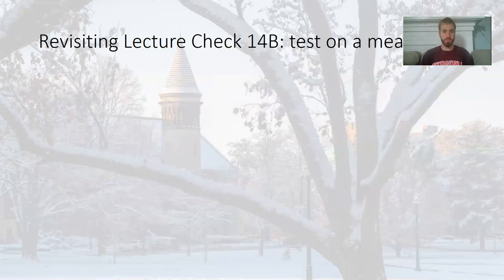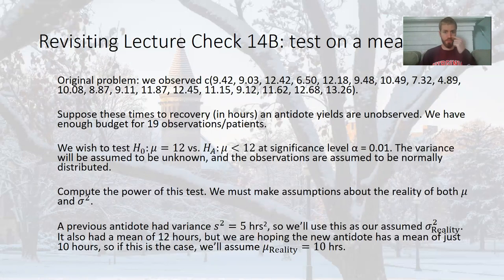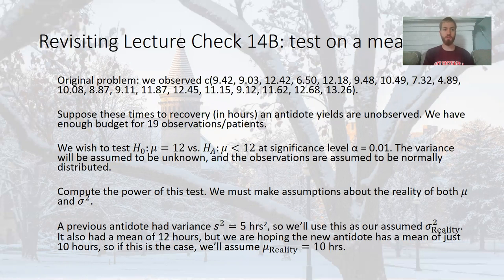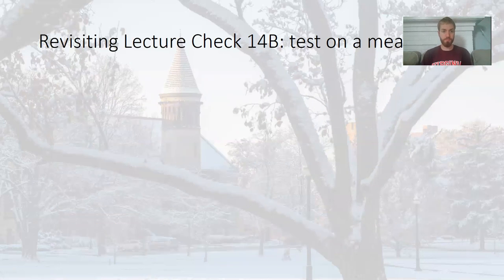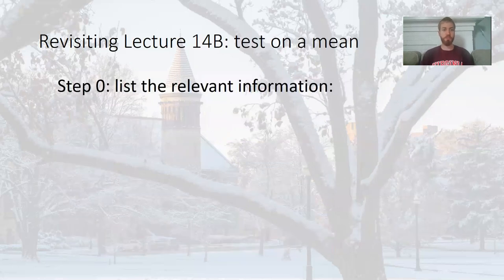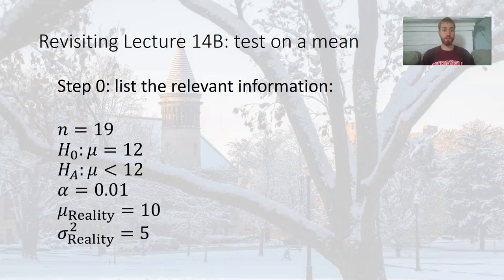Here's all the relevant information: sample size n equals 19, the null and alternative hypotheses, significance level alpha equals 0.01, and the parameters we're assuming. The context of this problem is recovery times after an antidote is administered to someone who's been poisoned. We know from a previous version of the antidote that it had a mean of 12 hours. We're hoping the new one has a mean of 10, so our mu-reality is 10. We'll also assume the reality variance is 5 hours squared. The true mean is assumed to be 10, the true variance assumed to be 5.